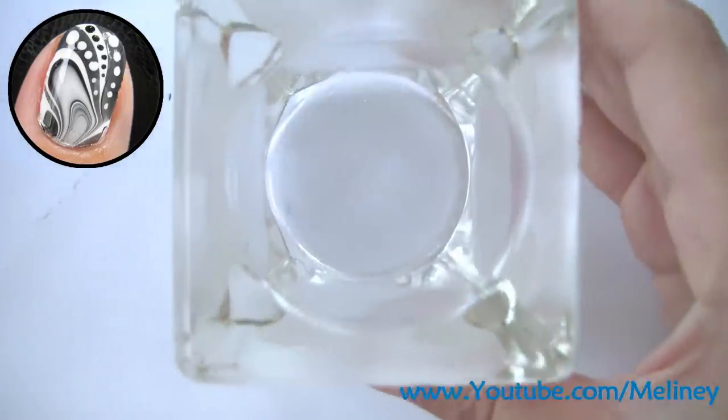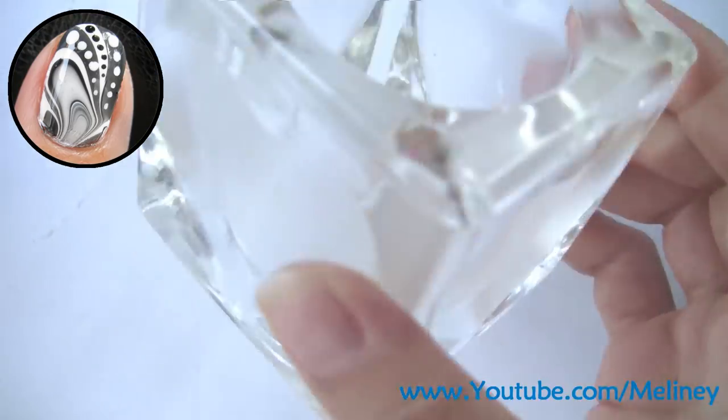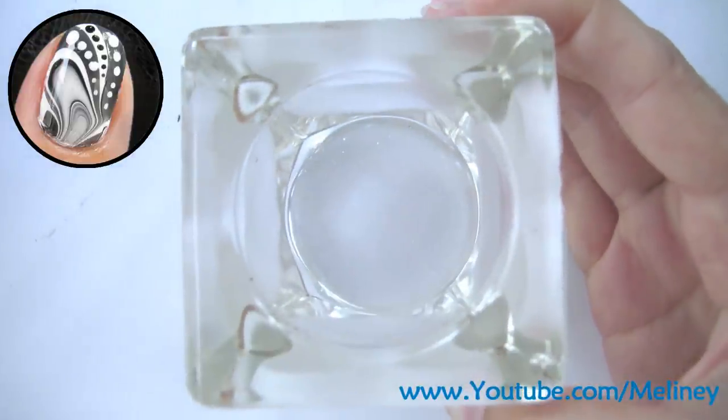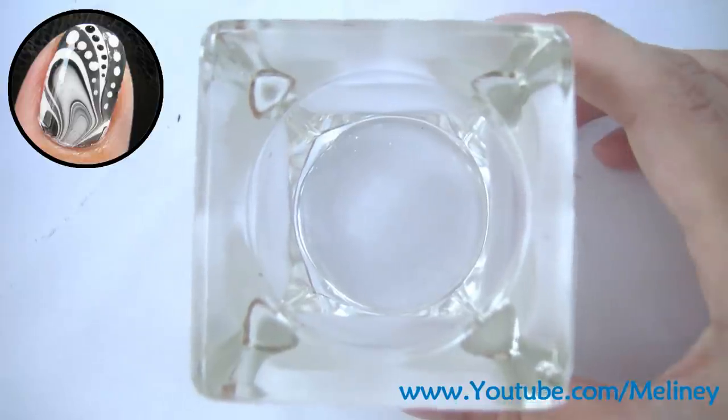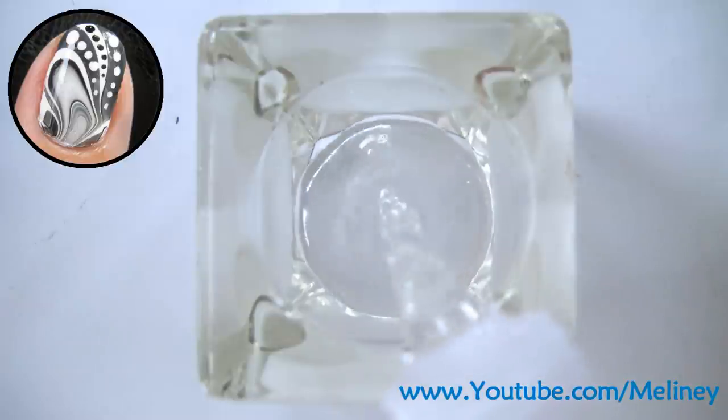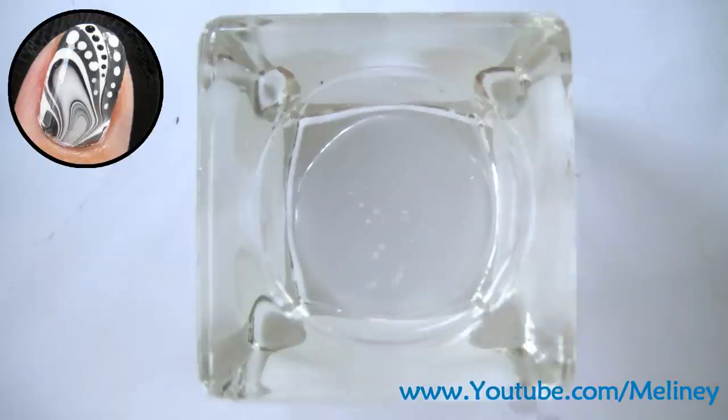I'm using this glass candle holder with a 5cm diameter opening. It's not too big, so hopefully I won't have to use too much nail polish to fill it. You can also use any round-shaped containers or cups, whatever you can find around the house. Then I filled it with tap water and let it sit for about 30 minutes or so until it becomes room temperature.